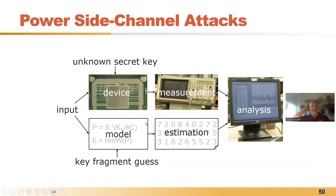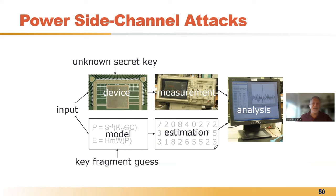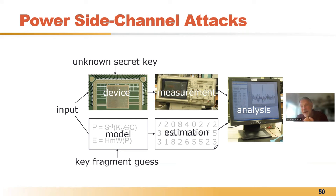That last attack was a microarchitectural attack, and Kocher's attack was a software side channel. Now let's take a look at an analog side channel. Any emanations — be they timing from the microarchitecture, timing from the program, or power from the circuits — can be used to pull information out of a program.